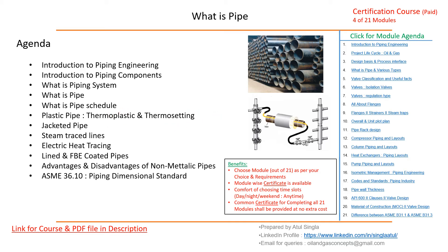Then jacketed pipe — where we are going to use it, what is its application, what are the advantages and disadvantages. Steam traced lines — why we go for steam tracing, electrical traced lines — we'll go into each and every part.